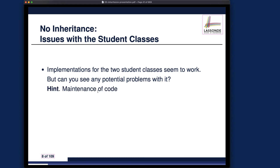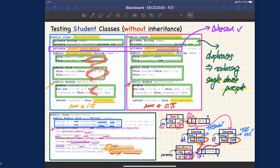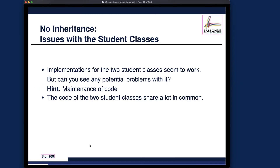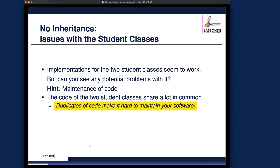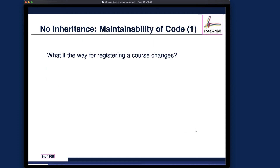What about the single choice principle? Think about maintenance: if you want to add or delete something due to a policy change, you may have to modify multiple places in your classes — that violates single choice. The code of the two student classes shares a lot in common — all the highlighted duplicated parts. If we added an international student type, we'd create yet another class and repeat all that code. Duplicates of code make software hard to maintain — that's the critical takeaway for the second design.